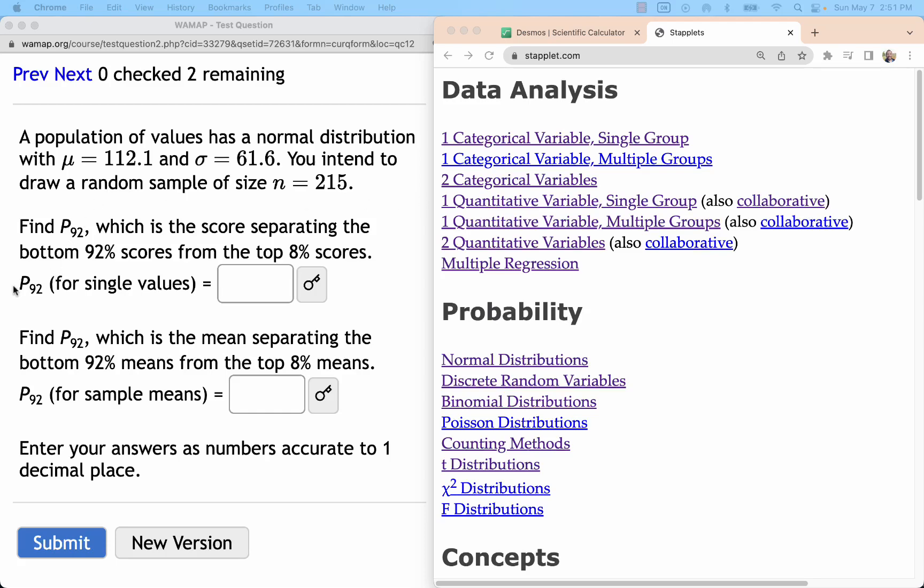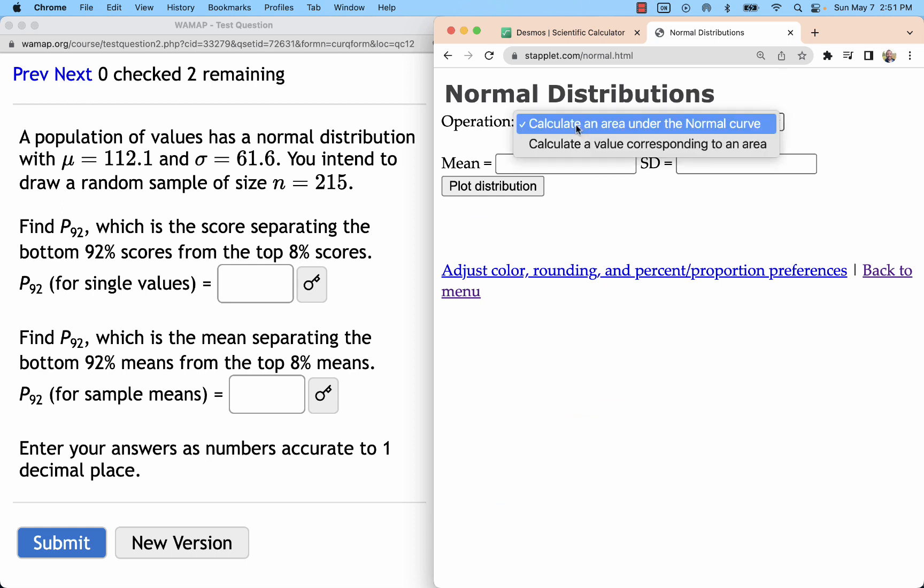In this situation we are looking for percentile. We're still looking at normal distributions here but we're going to change the operation from calculate area to calculate value corresponding to area.